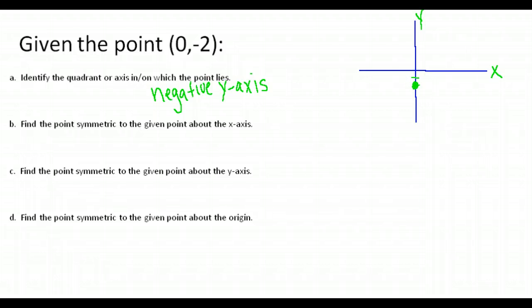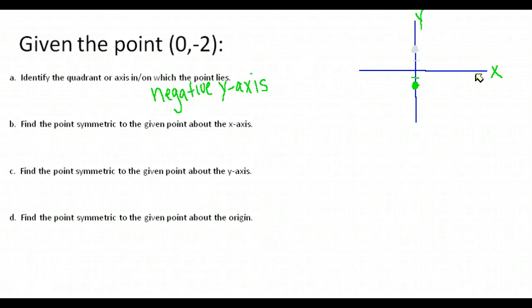We want the point symmetric about the x-axis. Here is our x-axis; we want to reflect over that. This point is two below the x-axis, so reflecting across it would give a point two above the x-axis. Using the shortcut for symmetry about the x-axis: change the sign of the y-coordinate. That puts us at zero, two. Symmetric about the y-axis is a bit tricky — since the point is on the y-axis, it's just symmetric to itself: zero, negative two.